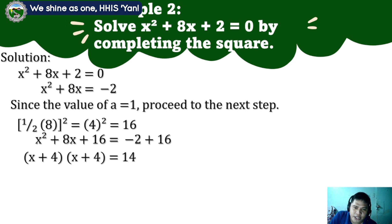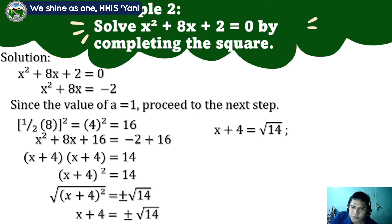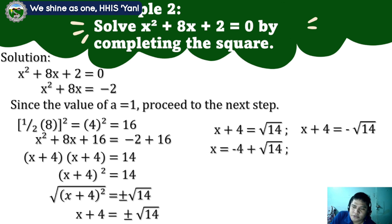x squared plus 8x plus 16 is a perfect square trinomial. The factored form is x plus 4 and x plus 4. Negative 2 plus 16 equals 14. So x plus 4 squared equals 14. We extract the square root of both sides: square root of x plus 4 squared equals positive or negative square root of 14. Cancelling the radical sign and exponent, we get x plus 4 equals positive or negative square root of 14. We have two solutions: x plus 4 equals square root of 14, and x plus 4 equals negative square root of 14. For the first solution, subtract 4 from both sides: x equals negative 4 plus square root of 14.